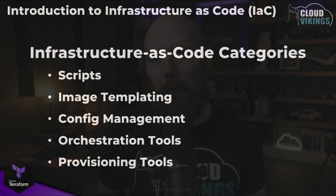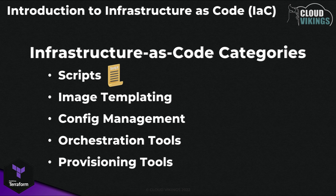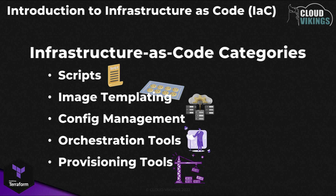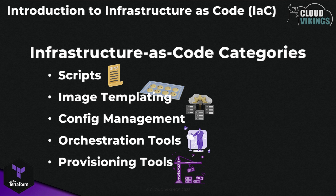Staying focused on understanding infrastructure as code itself first — the IaC types can be largely grouped into these categories: scripts as a basic form, image templating tools, config management tools, orchestration tools, and provisioning tools. Without knowing what all these categories are about yet, make a guess where you think Terraform fits in. Terraform's functionality can actually span across multiple categories, but it primarily fits into one of them.